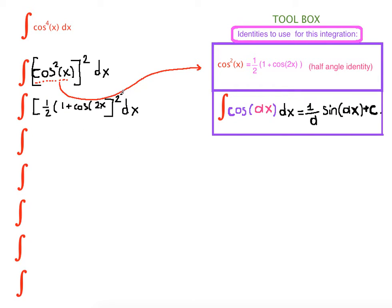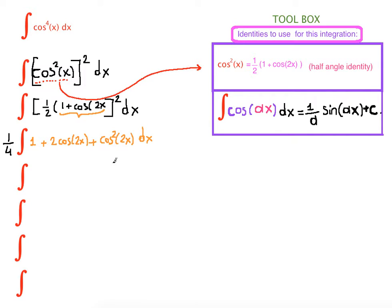What is one half squared? One half squared is one fourth — we can pull that to the front. Then we have to square this, so if you FOIL that you're going to get one plus two times cosine of 2x plus cosine squared of 2x, and dx.